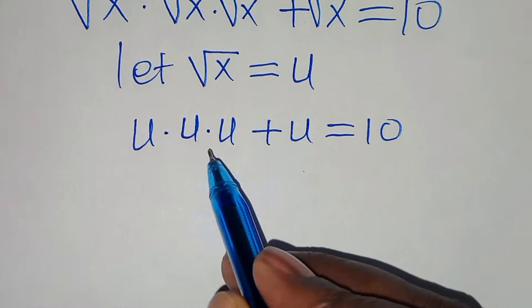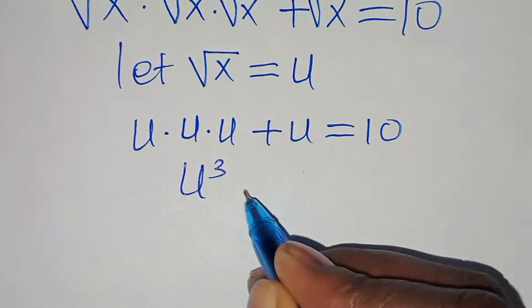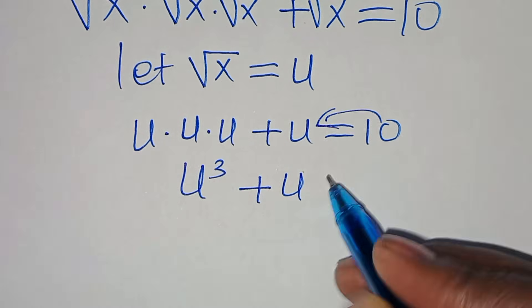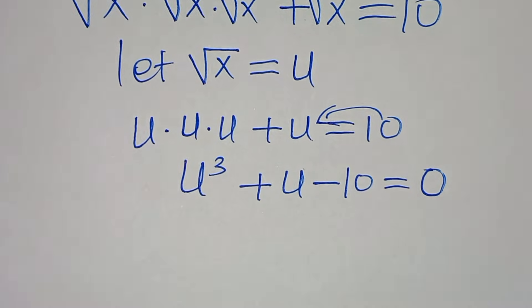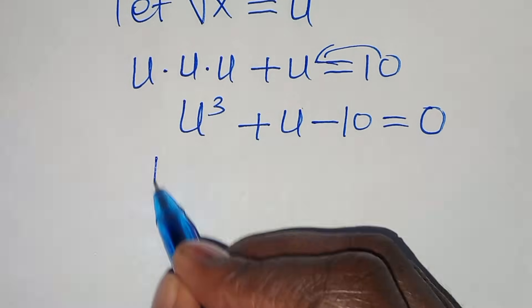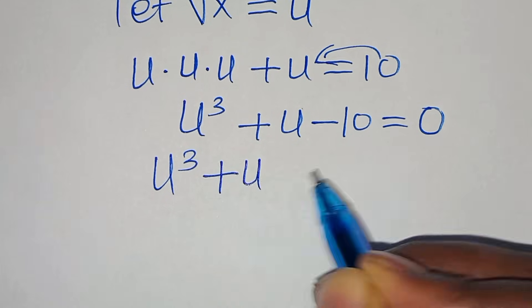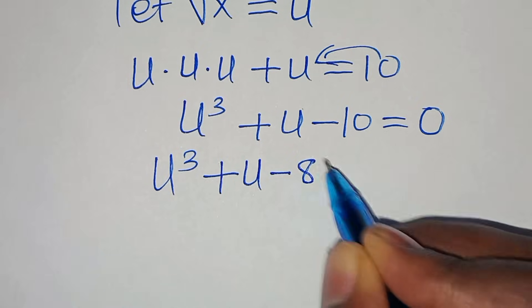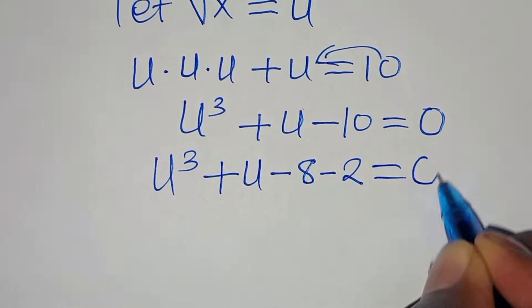So we have u times u times u, which is u to the power of 3, then plus u. Taking 10 to the left-hand side gives us u³ + u - 10 = 0. We can split -10 as -8 - 2, so u³ + u - 8 - 2 = 0.